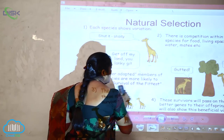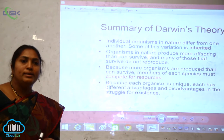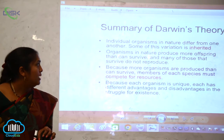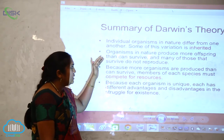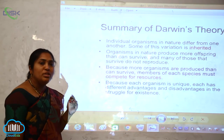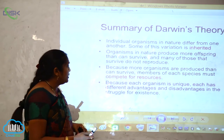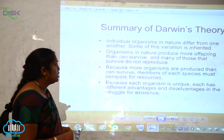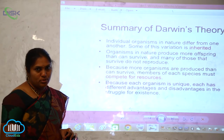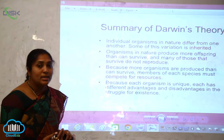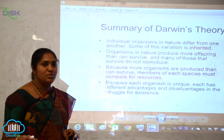The summary of Darwin's theory, known as Darwinism, is that individual organisms in nature differ from one another, and some of these variations are inherited. Organisms produce more offspring than can survive, and those that do not survive do not reproduce. Since more organisms are produced than can survive, members of each species must compete for resources.